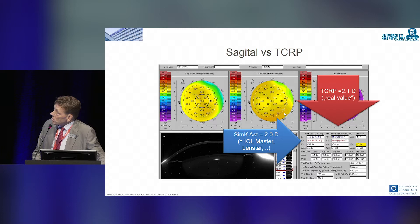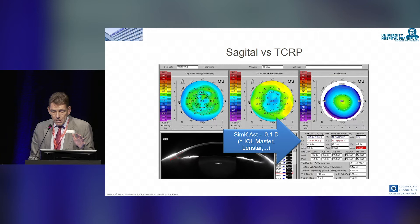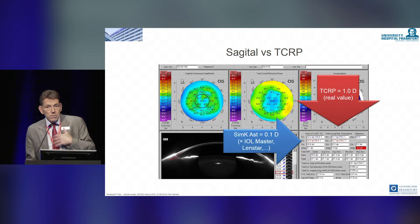But if you have a case where you have a SIMK of 0.1 and total refractive power of one diopter, then you have to make a decision on how you treat the astigmatism.